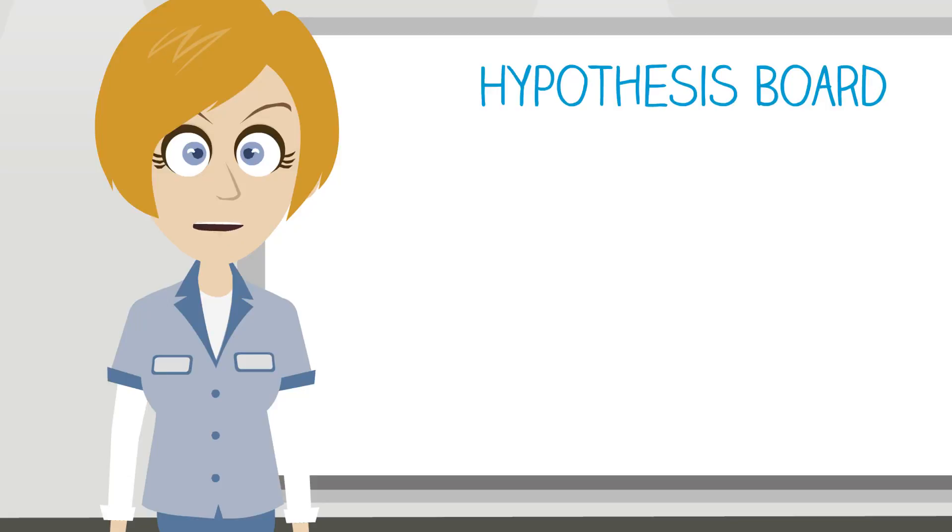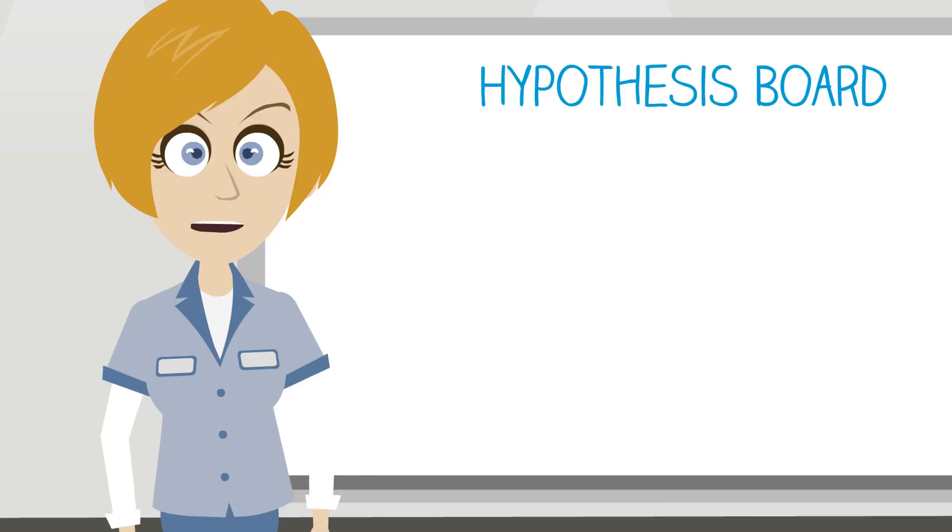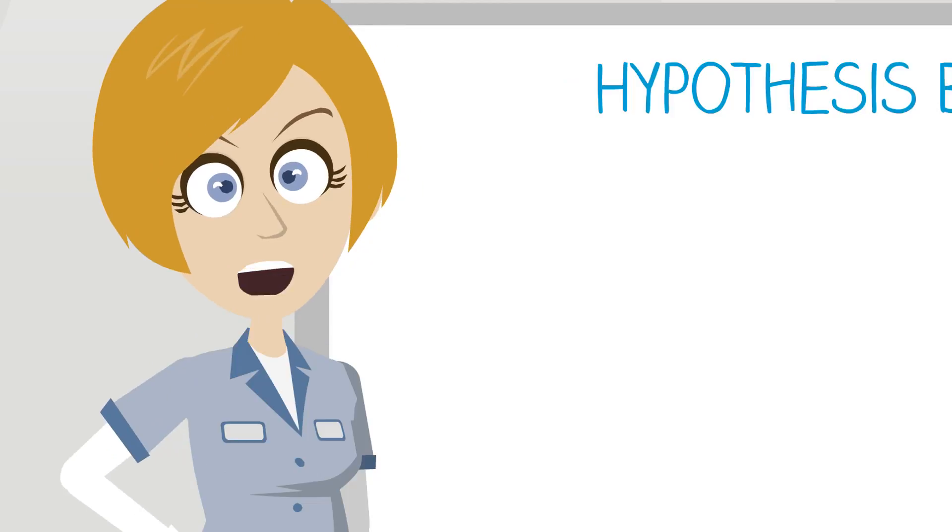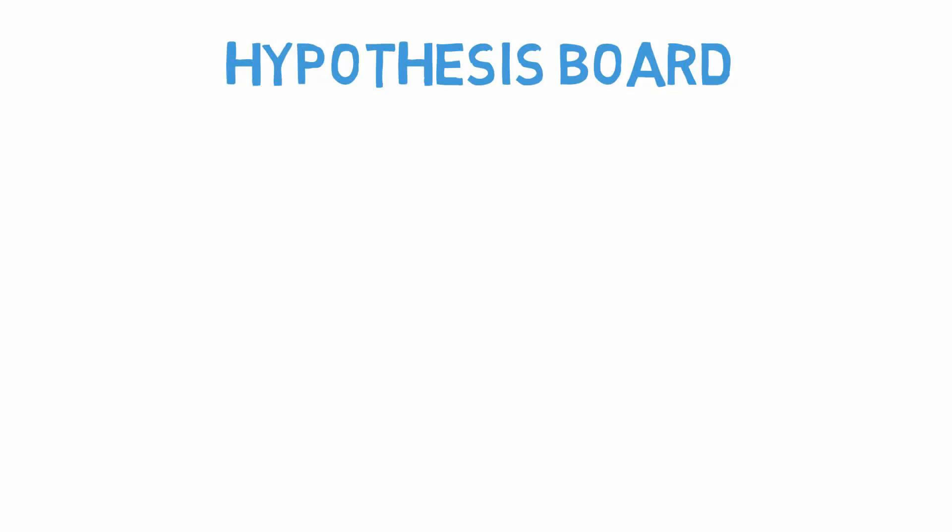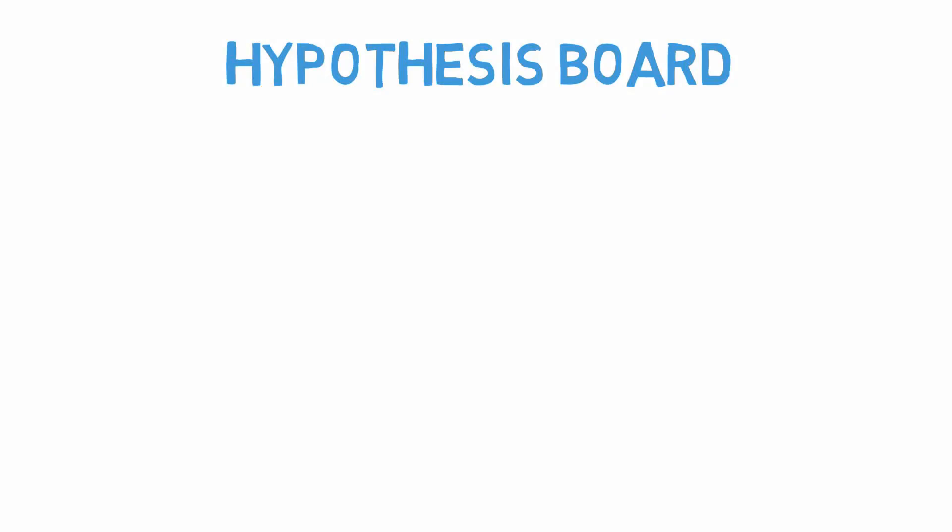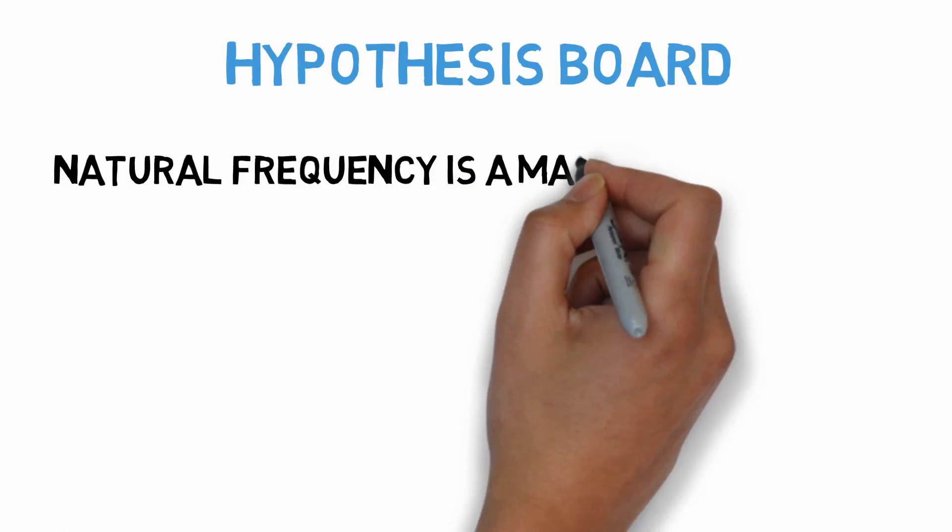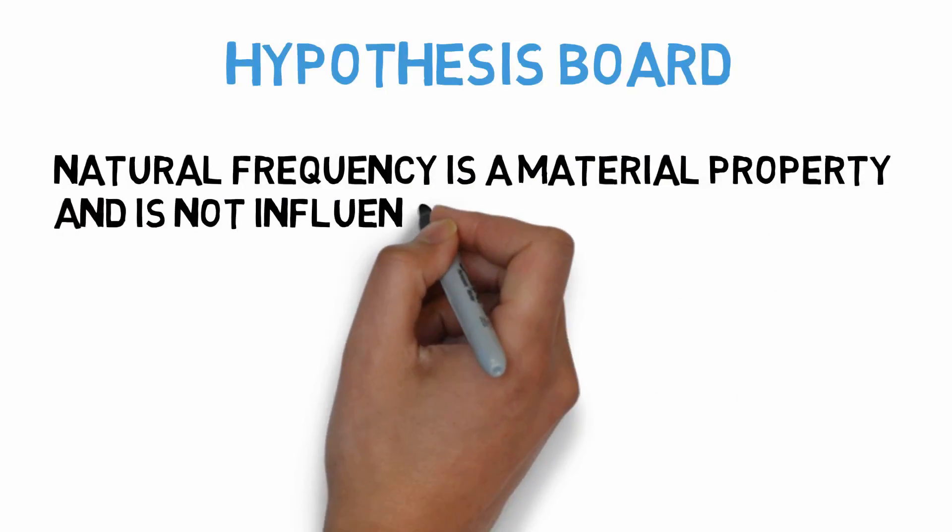I know that all materials exhibit a natural frequency and have a resonance frequency. If you look very closely at a few skyscrapers, you might see them swaying in the wind a bit. Tall buildings and bridges are mostly made of the same materials, so they must have the same natural frequency. Therefore, I will make the following hypothesis: Natural frequency is a material property and is not influenced by design.